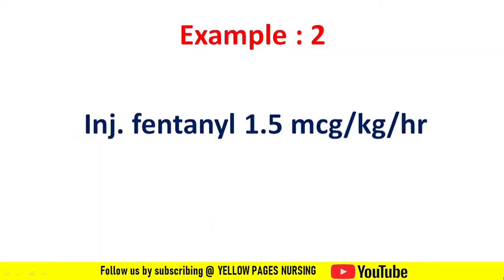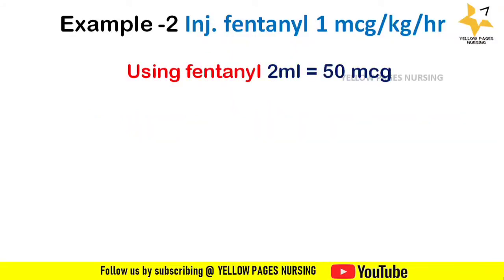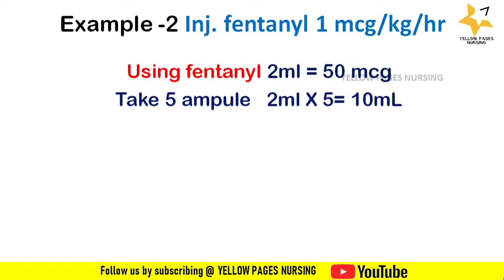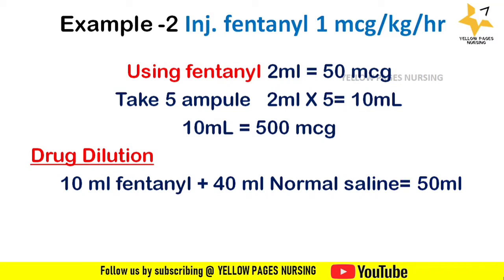For the second example, the doctor's order is injection fentanyl 1.5 micrograms per kg per hour, calculated using the 2 ml fentanyl ampule. Using 5 ampules of fentanyl gives 10 ml, which equals 500 micrograms. The drug dilution is 10 ml fentanyl with 40 ml normal saline, giving 50 ml total, with a strength of 10 micrograms per ml.